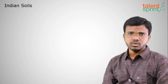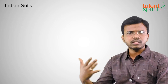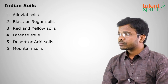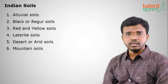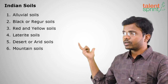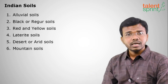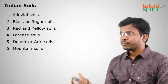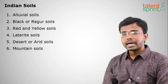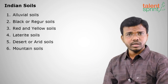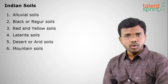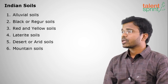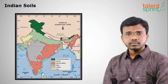Moving on to soils of India — there are six types of soils in India. The first is alluvial soil, the most fertile. Next is black or regur soils, then red and yellow soils, then laterite soils, then desert or arid soils, and finally mountain soils. We shall now discuss each of them in detail.